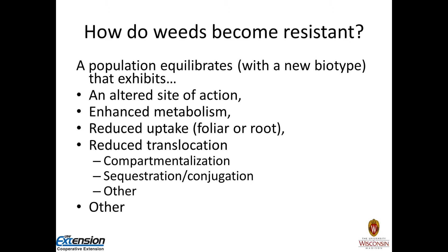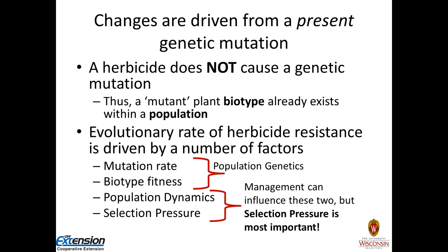Weeds become resistant when a population equilibrates with a new biotype that can withstand herbicide application. That biotype may have an altered site of action, enhanced metabolism, reduced uptake through foliage or roots, or reduced translocation. Once the herbicide is in the plant it may be compartmentalized or sequestered so it never reaches the site of action. There can also be other mechanisms we don't fully understand yet.